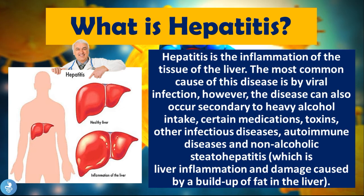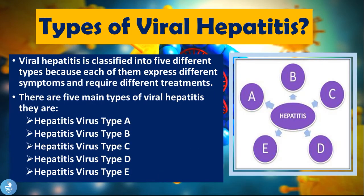So what are the types of viral hepatitis? Viral hepatitis is classified into five different types because each expresses different symptoms and requires different treatments. They are hepatitis virus type A, type B, type C, type D, and type E. I've done videos on A, B, and C — links will be in the description. In today's video we're going to focus on hepatitis virus type D.